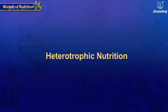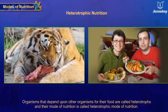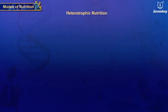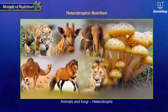Two: heterotrophic nutrition. Organisms that depend upon other organisms for their food are called heterotrophs, and their mode of nutrition is called heterotrophic mode of nutrition. For example, all animals and fungi are heterotrophs.